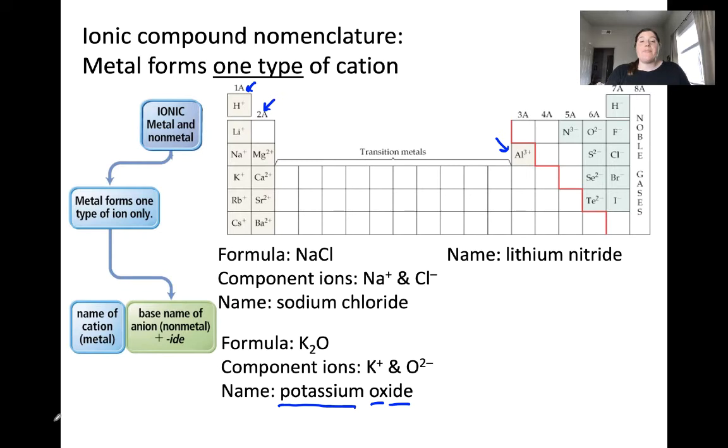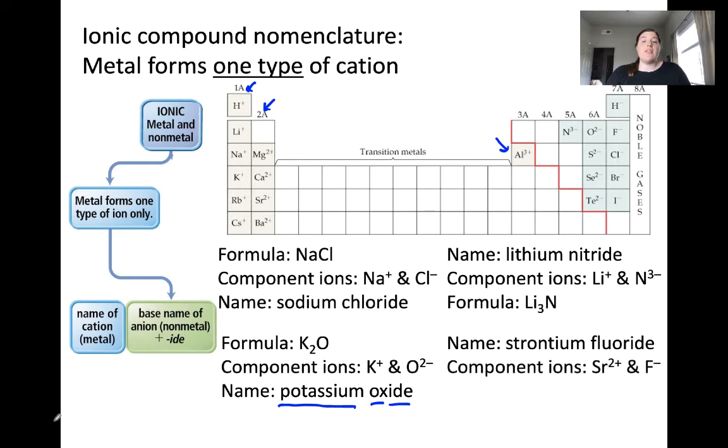Let's go the other way. For lithium nitride you know it's an ionic compound because it contains a metal and a nonmetal. The component ions are Li+ and N3-. Again we know because both lithium and nitrogen form predictable charged ions. The formula is Li3N for charge neutrality. There are three Li+ ions for every one N3- ion. These cancel each other out and result in a charge neutral compound. Strontium fluoride: component ions Sr2+ and F-. The formula here is SrF2. Two negatively charged fluoride ions for every one Sr2+ ion.